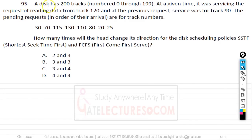Question number 95. A disk has 200 tracks numbered from 0 to 199. At a given time, it was servicing the request of reading data from track number 120, and at the previous request, service was for track number 90. The pending requests are track numbers 30, 70, 115, 130, 110, 80, 20, and 25.